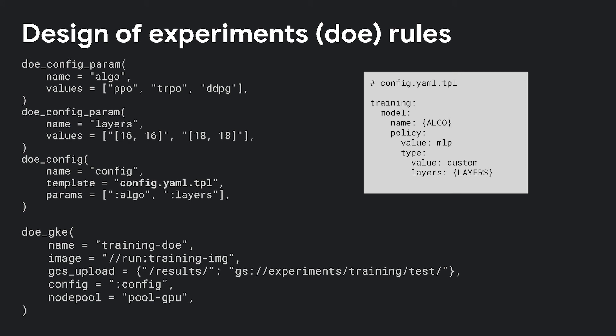In code, the YAML template file has parameters like ALGO and layers. In the build file, you refer to those parameters using the DOE config param rule — there's an ALGO target and a layers target. You bring those together in the config target, declaring a full factorial parameter exploration. The last step is our DOE GKE rule, which takes an image (another Bazel target packaging your software), a GCS bucket to upload results, and the DOE configuration. You can also specify a node pool on GKE, and in less than 15 lines of code you're ready to Bazel run thousands of experiments on the cloud with no more coding needed.